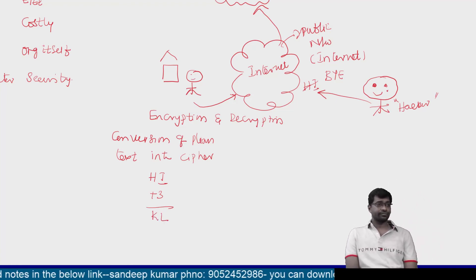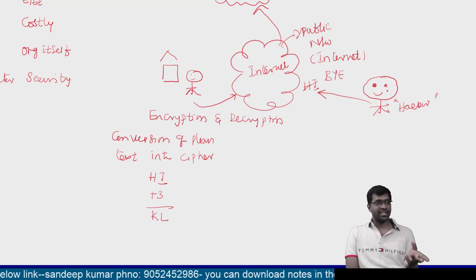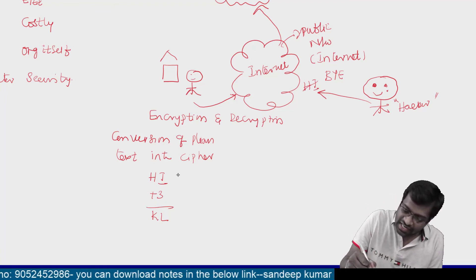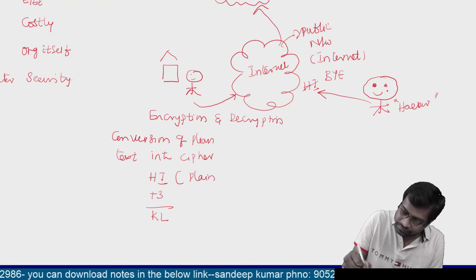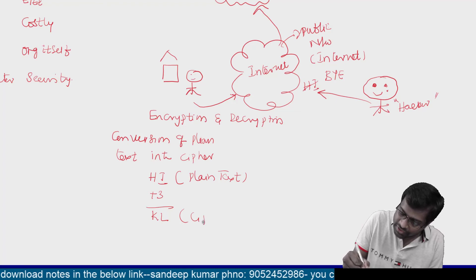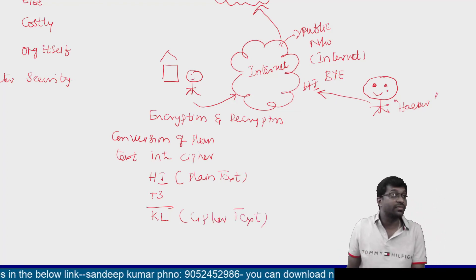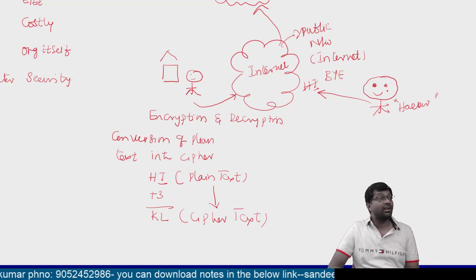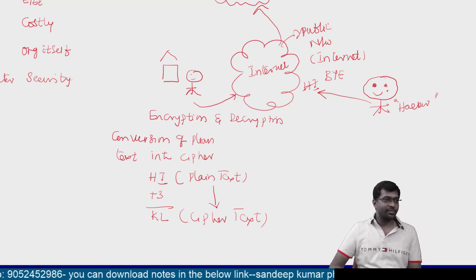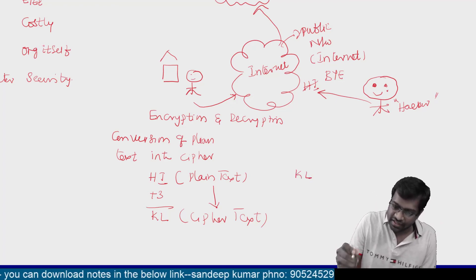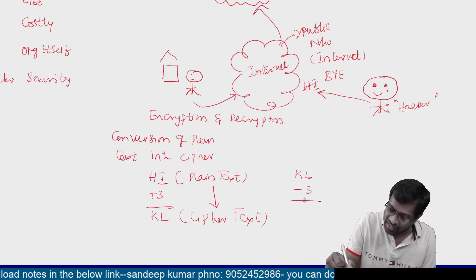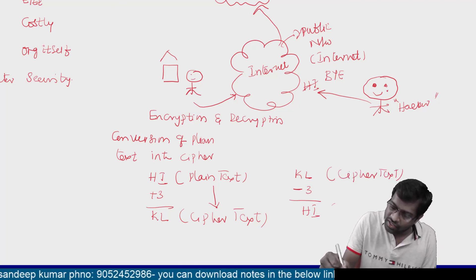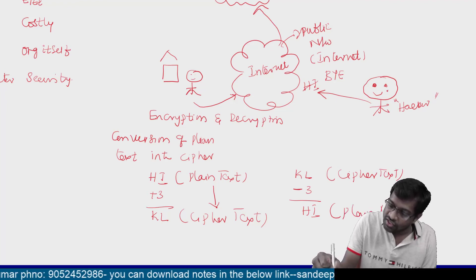So using the alphabet, H, I shifted by +3 becomes K, L. 'HI' is called the plain text, and after conversion it becomes 'KL' — the ciphertext. Cipher means secret or encrypted. Converting plain text into ciphertext is called encryption. Decryption is the reverse: once 'KL' is received at the receiving side, I use minus 3 and convert it back to 'HI'. So decryption is the conversion of ciphertext back to plain text.